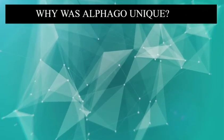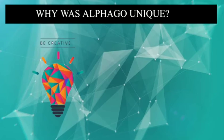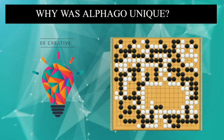AlphaGo was unique in many ways. First, it was very creative. Generally we think that machines lack creativity, but actually they are very creative. In one of the games against Lee Sedol, AlphaGo played a move 5 on line which only 1 out of 1 million human players would have played.